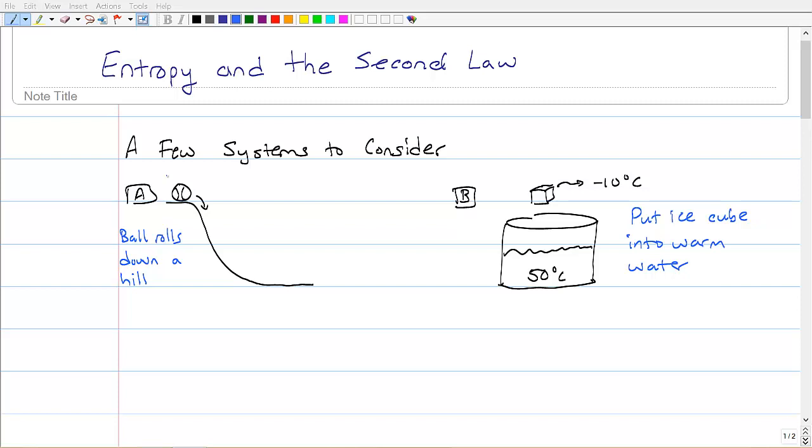And the idea is this. Look at this first example of a system here, System A. It's just a ball, and if we let this ball go, it's going to roll down this hill. And you know this is going to happen. You've seen it happen. It's going to happen every time.